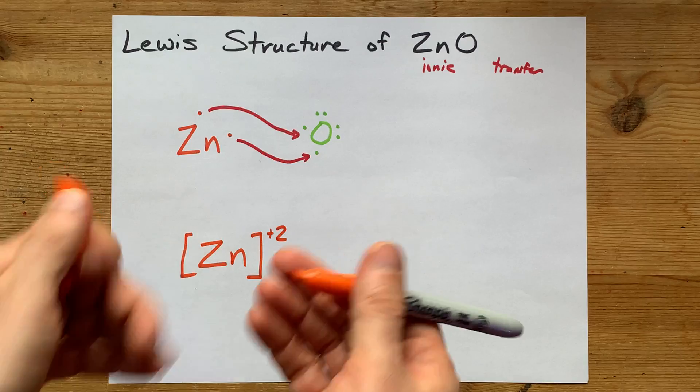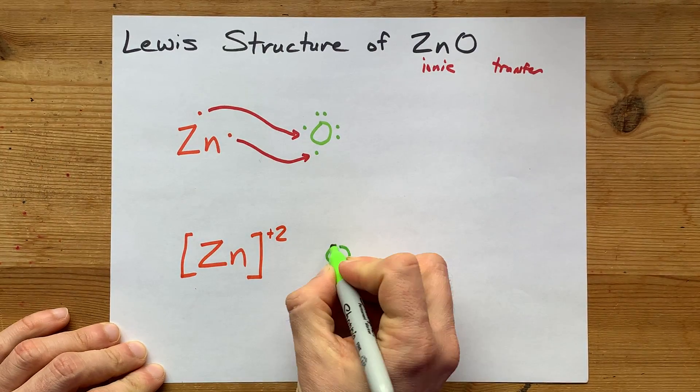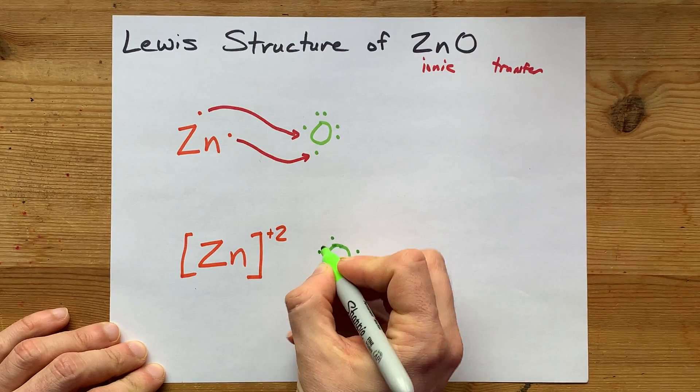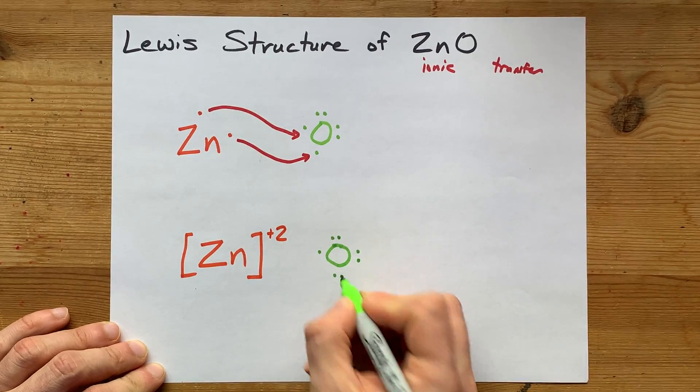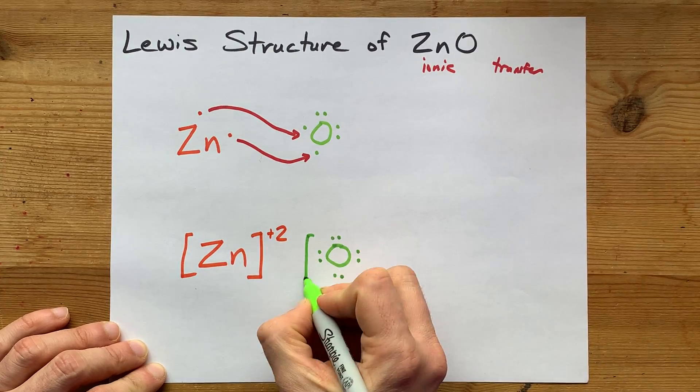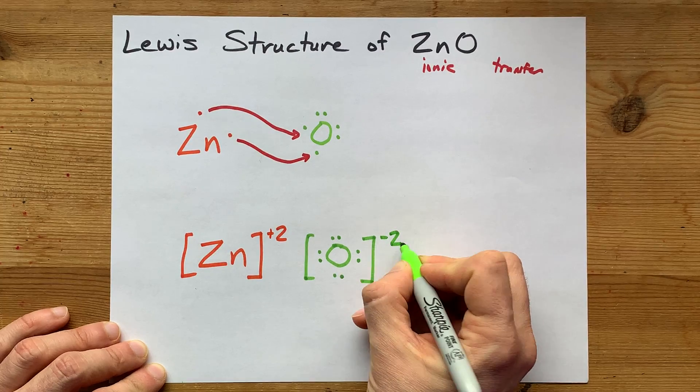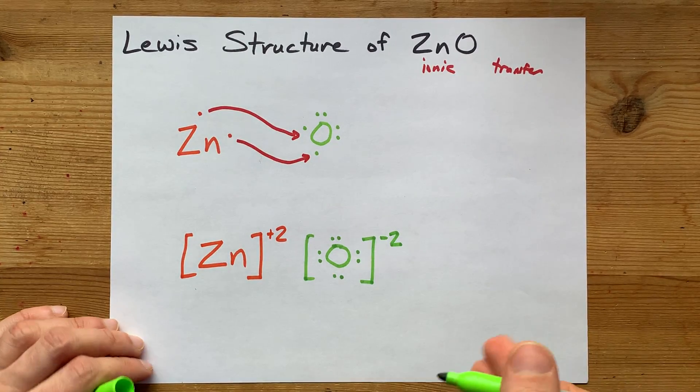Losing negatives makes you positive, right? And oxygen will have its 6 valence electrons, like that, plus 1, 2 from zinc. So now that oxygen is also an ion with a minus 2 charge because it has 2 extra electrons.